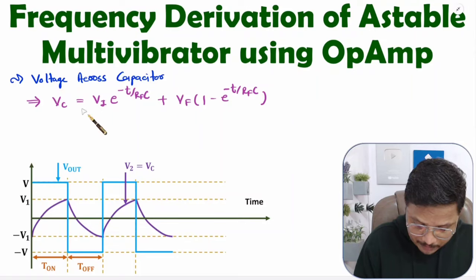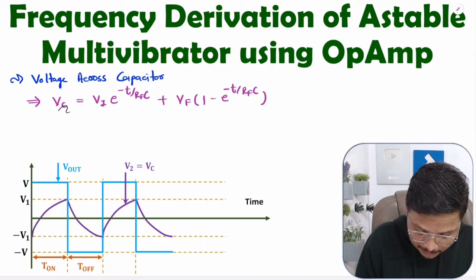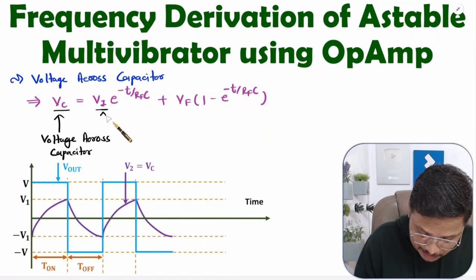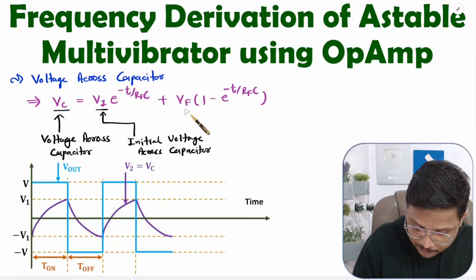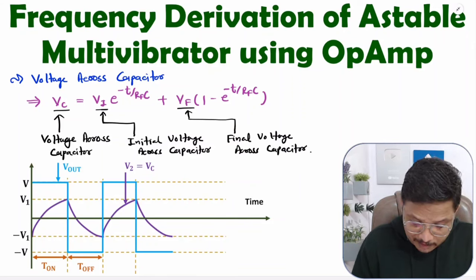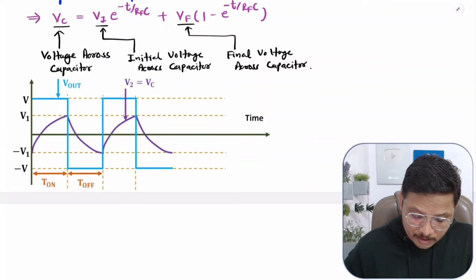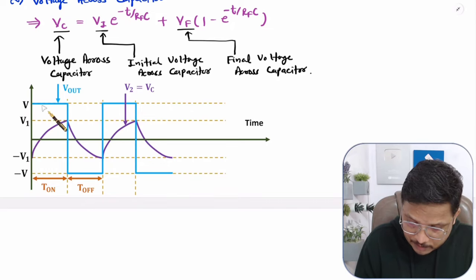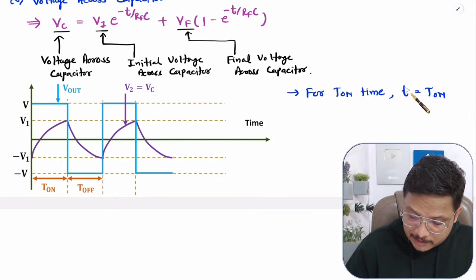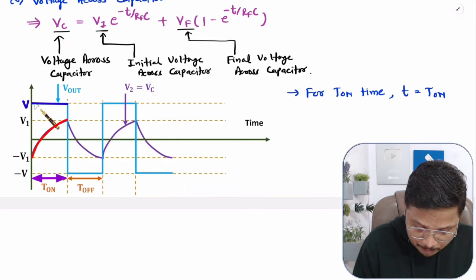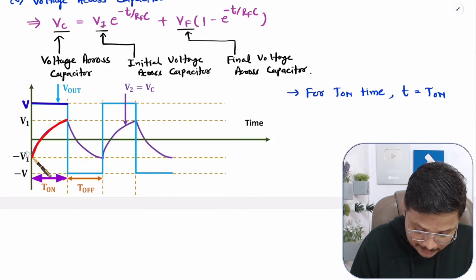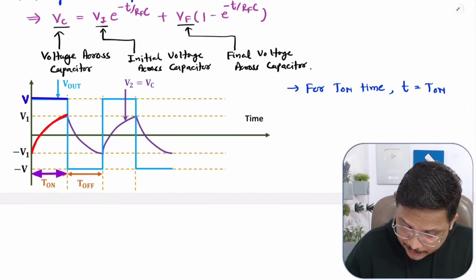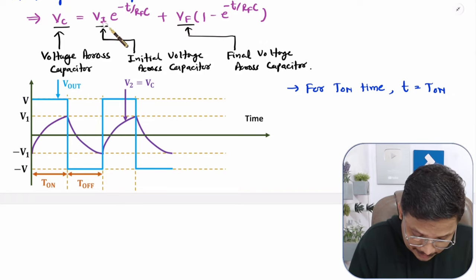Here Vc is the voltage across the capacitor, Vi is the initial voltage across the capacitor, and Vf is the final voltage across the capacitor. If I consider the T-on time period, during T-on the output voltage Vout is plus V. At that time, the initial voltage Vi across the capacitor is minus V1. So the initial voltage Vi equals minus V1, which equals minus V into R1 divided by R1 plus R2.